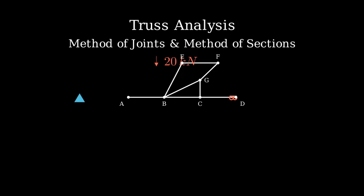Let's begin by analyzing joint E using the method of joints. At this joint, we have three forces: the 20 kN downward load and the unknown forces in members BE and EF. For equilibrium, the sum of forces in both x and y directions must equal zero.